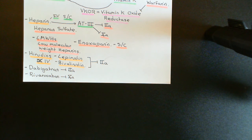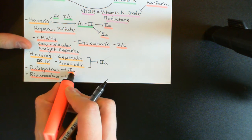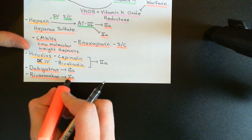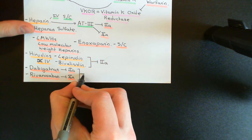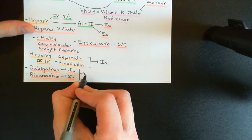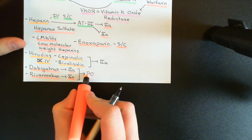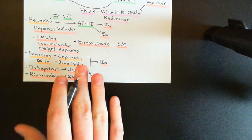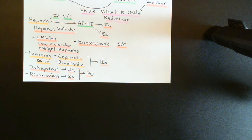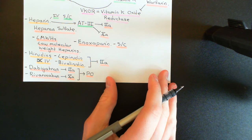Dabigatran and rivaroxaban can both be given orally, and they are inhibitors of these very important coagulation factors, hence preventing the production of fibrin mesh, making them very powerful anticoagulants that stop thrombosis from occurring. Those are the last of the anticoagulants I want to mention. It's rarer that you will see people prescribe these, but occasionally they are used, so they're well worth being aware of.